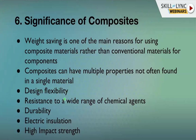Composites offer resistance to a wide range of chemical agents — by selecting the appropriate matrix material for chemical environments. They also offer durability, electrical insulation, and high impact resistance. Using sandwich structures, composites achieve very high impact strength — an advantage over metals when designing for impact resistance.